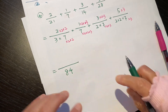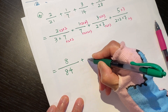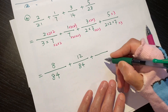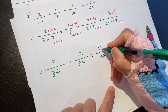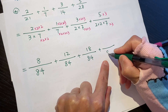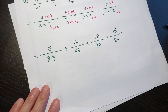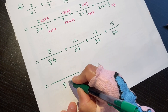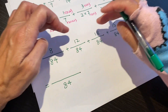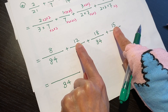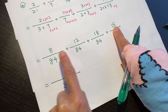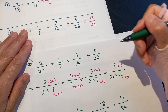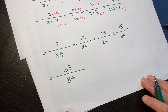The denominator is the same — 84 — for all fractions. We copy the denominator and add the top numbers: 8 plus 12 plus 18 plus 15. That gives us 30, then 45, then 53. So the answer is 53 over 84. That is the result, and this is the step-by-step process of how we made it.